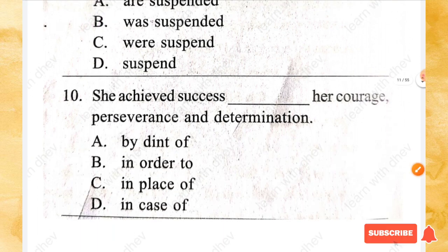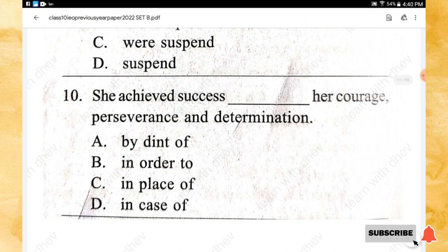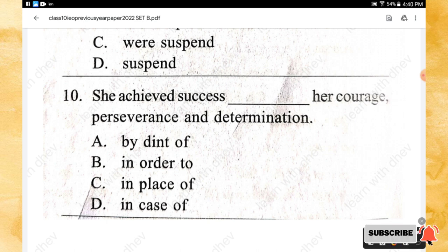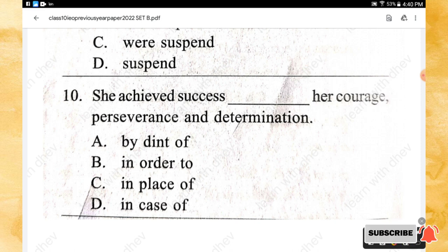Question 10: She achieved success _____ her courage, perseverance, and determination. Options: by dint of, in order to, in place of, in case of. The right answer is option A — by dint of.